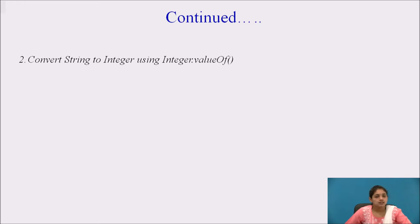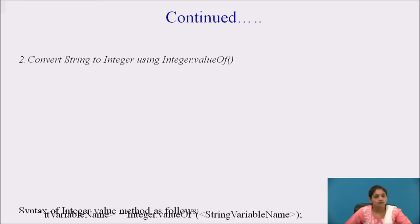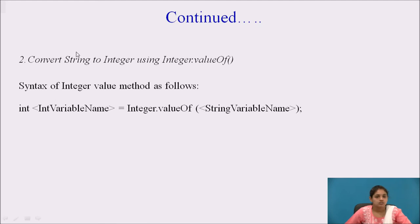Second is converting the string to integer using the Integer.valueOf() method. The syntax is similarly: you will require one more variable of integer data type — int variableName = Integer.valueOf(stringVariableName).